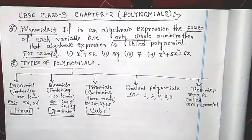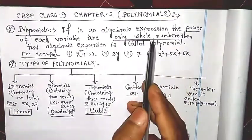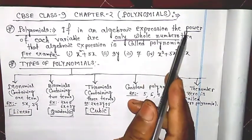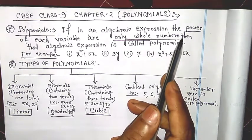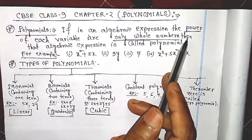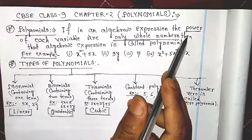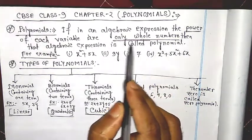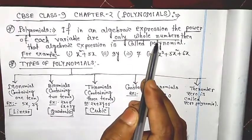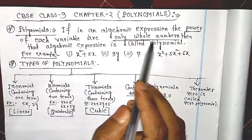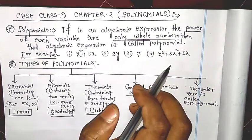The power cannot be negative or a fraction — it cannot be any other number. Only the power must be whole numbers. That is the most important condition for a polynomial. This is the definition of polynomial.